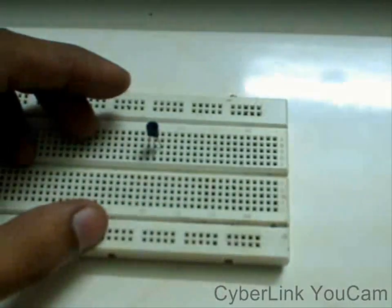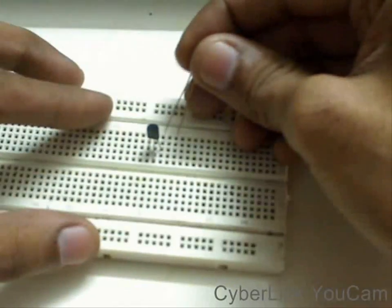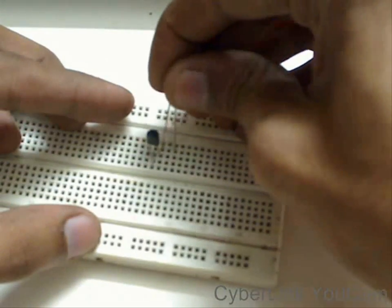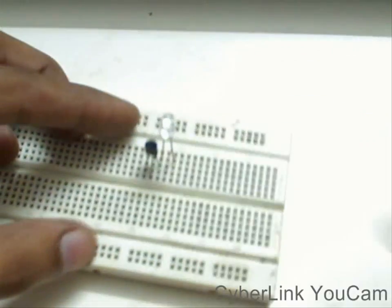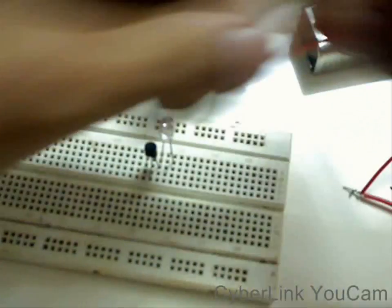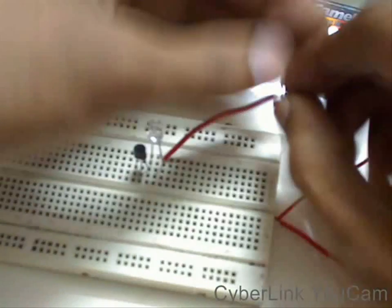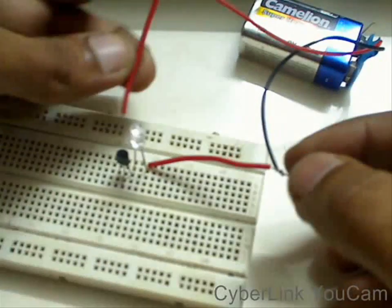Now what we will do is we will connect an LED as an indicator. This is a red color LED. We are going to connect the positive side of the LED to the emitter, and to the negative pin of the LED, we are going to connect the negative pin of the battery. And the positive side of the battery goes to the collector.